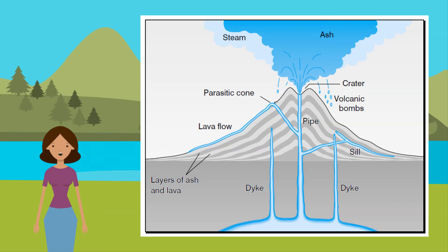Despite the danger, people still live close to volcanoes. Volcanic soils are very fertile. Tourists like to see volcanic hot springs, geysers, and boiling mud. Geothermal energy produces electricity. Precious stones and minerals are often found in extinct volcanoes. Check out the description for a link to test your knowledge.